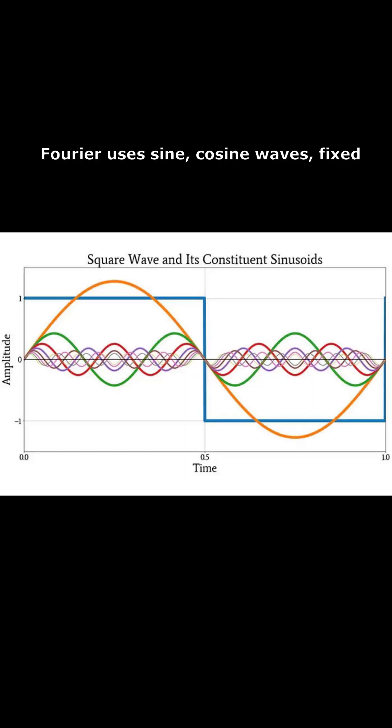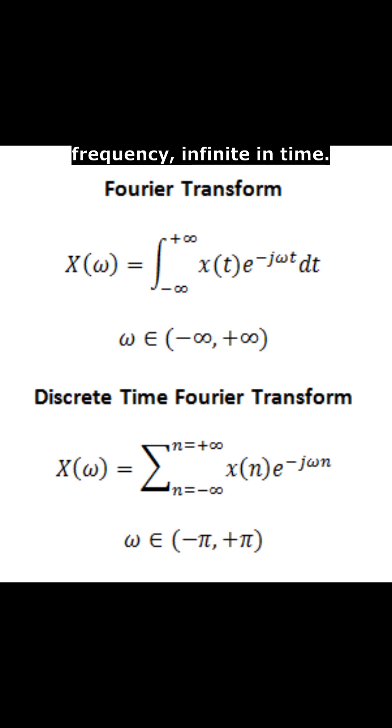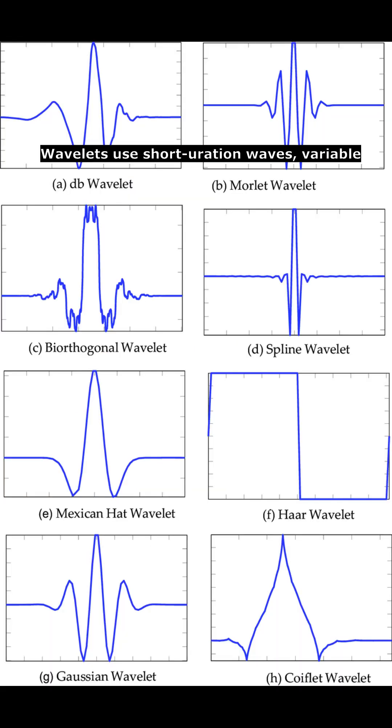Fourier uses sine and cosine waves with fixed frequency, infinite in time. Wavelets use short duration waves with variable size, localized in time.